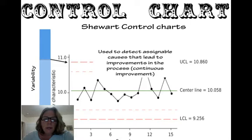So this is, again, it's used to detect assignable causes that lead to improvements in the process. So it helps quite a bit in guiding continuous improvement. It's not just a way of monitoring it, but it really is a means of doing process improvement.